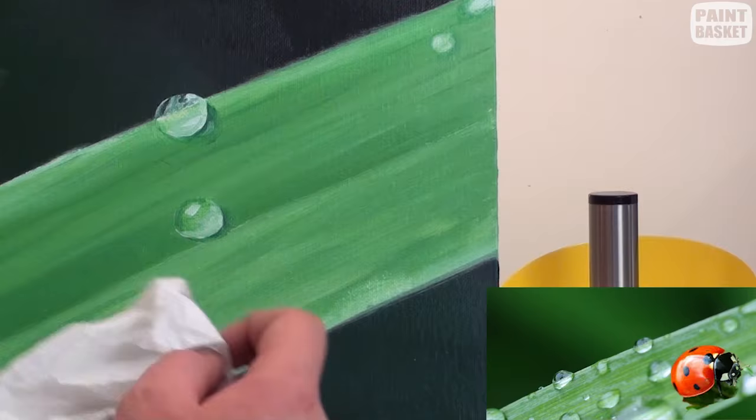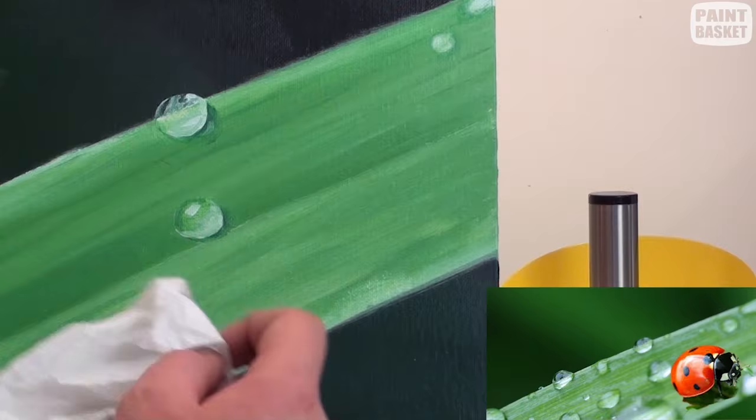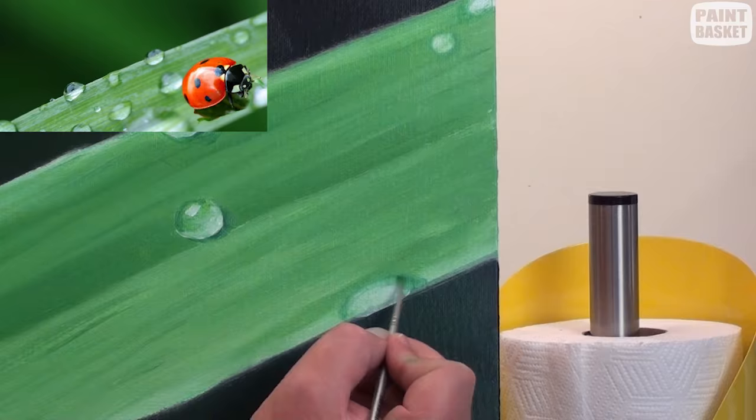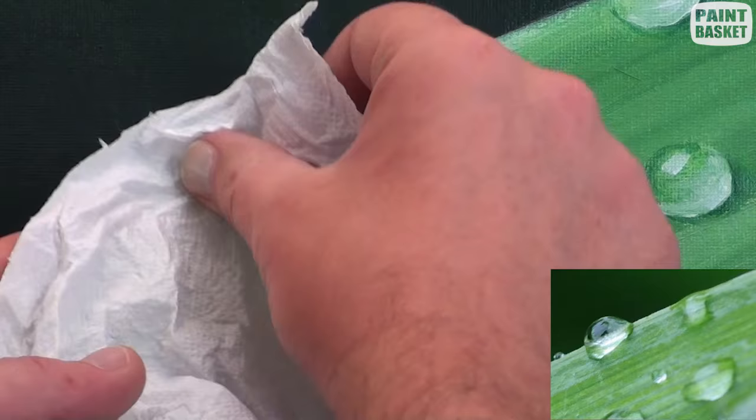When you're doing these water drops make each one a different shape. Also make sure that you don't have equal spacing in between each drop. Put a few together and then a few separate and then a few together and so on to make it look random.